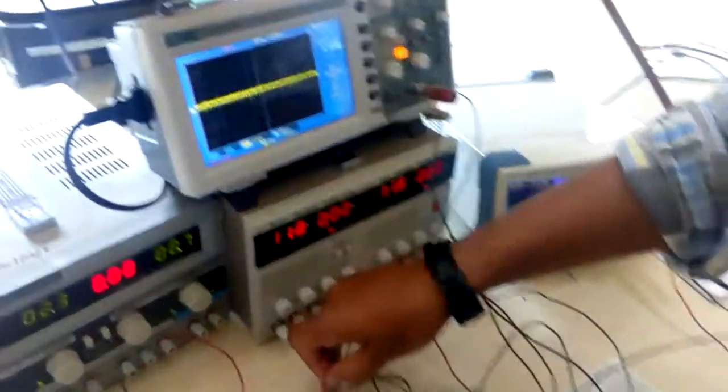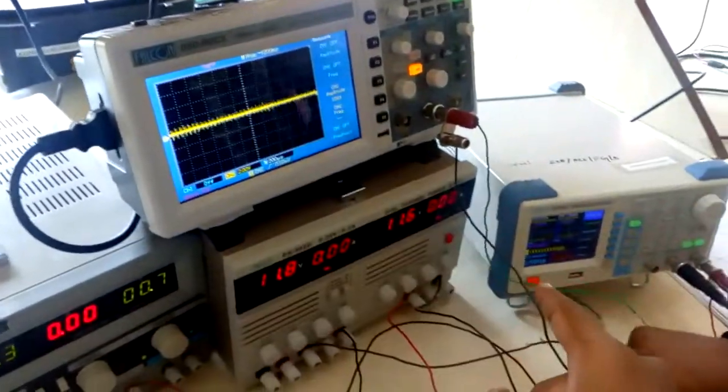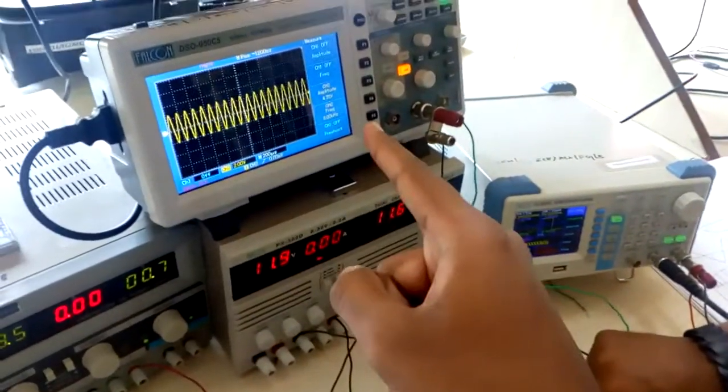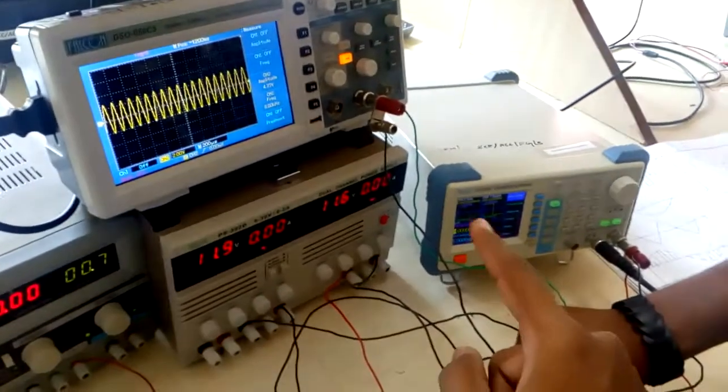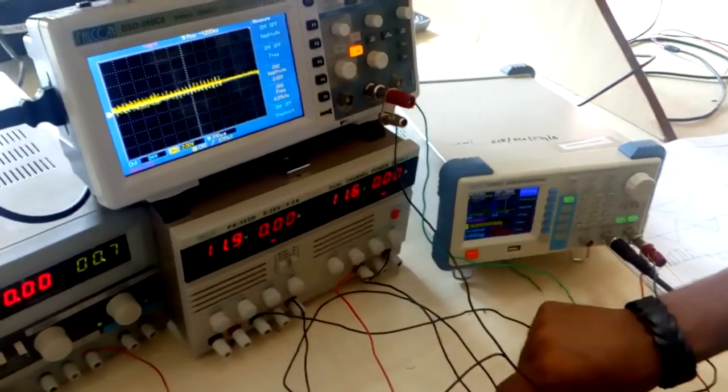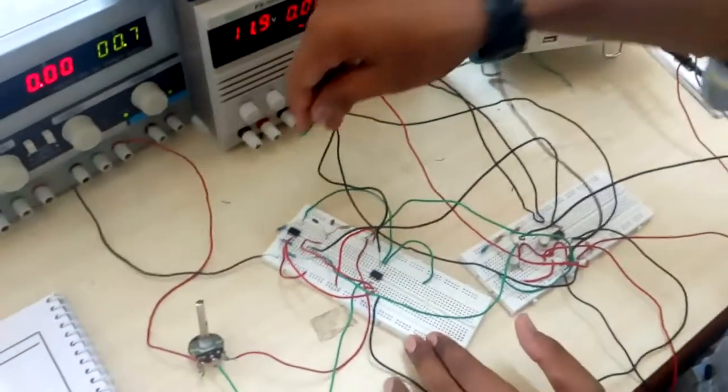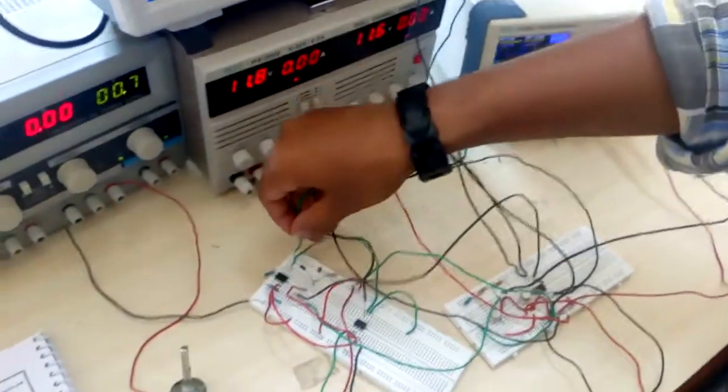Suppose the impedance doesn't match. If you have set 5V peak-to-peak but it shows 7V, you need to reduce the voltage on the signal generator to match the impedance.